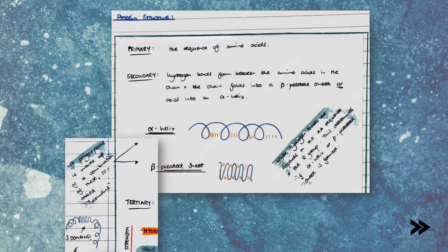Next, we'll have a look at protein structure, which consists of primary, secondary, tertiary, and sometimes quaternary structures. The primary structure is the sequence of amino acids. The secondary structure is when hydrogen bonds form between the amino acids in the chain, causing the chain to fold either into a beta-pleated sheet or to coil into an alpha helix. Where hydrogen bonds are formed depends on the amino acid sequence as well as the R group, which determines if an alpha helix or beta-pleated sheet is formed. A fully functioning polypeptide is made up of a combination of these domains, where each domain is either a section of alpha helix or beta-pleated sheet.